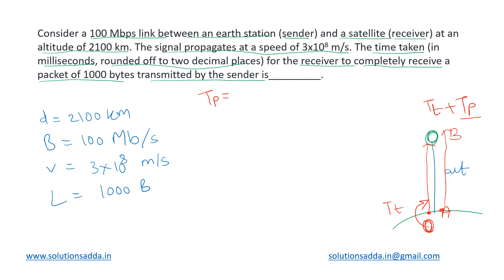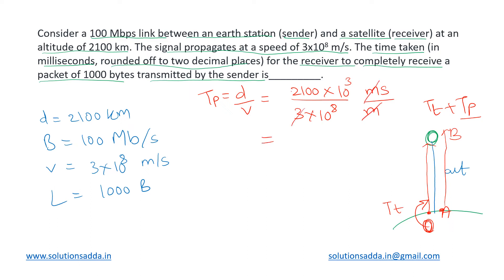The formula for propagation delay TP is d/v — distance divided by velocity. Distance is 2100 km = 2100×10³ meters, and velocity is 3×10⁸ m/s. This gives 2100×10³ / (3×10⁸) = 7×10⁵ / 10⁸ = 7×10⁻³ seconds = 7 milliseconds. So our propagation delay is 7 ms.